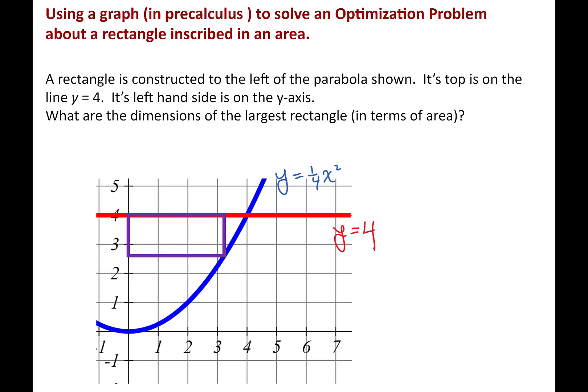This is a video about an optimization problem in a pre-calculus class, so we're not using calculus. We're going to have to use a graph to solve this. Here's the situation: we've got a rectangle constructed to the left of a parabola. It's to the left of this blue parabola, its top is on the line y equals 4, and the left-hand side is on the y-axis. The question is: what are the dimensions of the largest rectangle? The parabola itself is y equals one-fourth x squared.